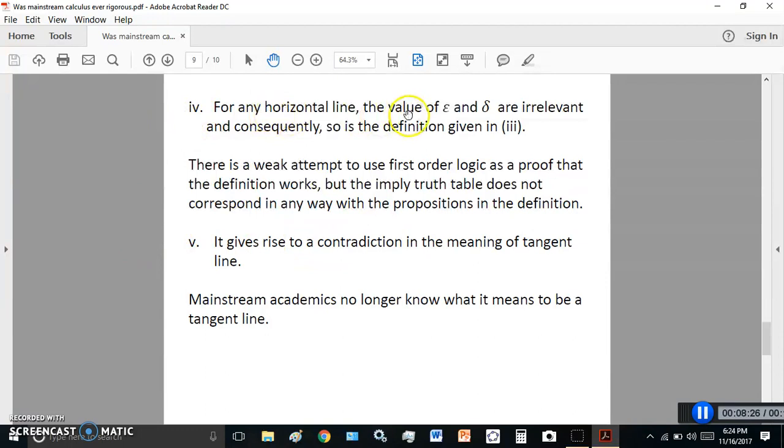Reason number four. For any horizontal line, the value of epsilon and delta are irrelevant, and consequently so is the definition given in three. There is a weak attempt to use first-order logic as a proof that the definition works, but the implied truth table does not correspond in any way with the propositions in the definition.